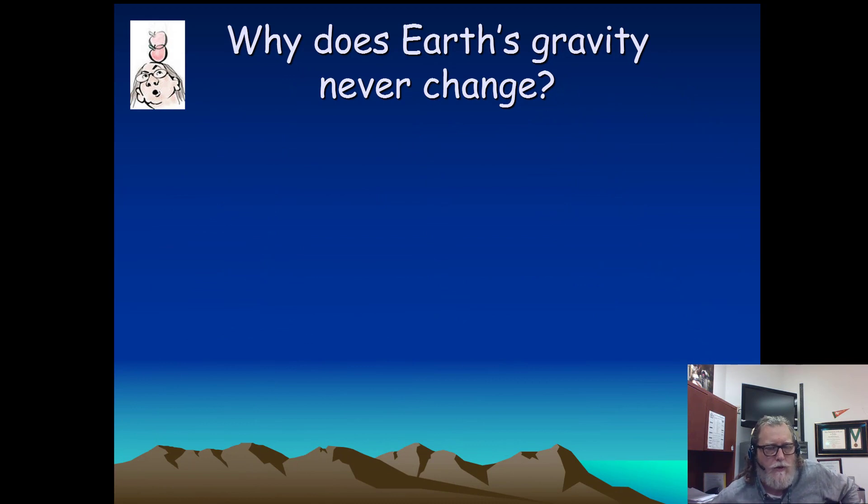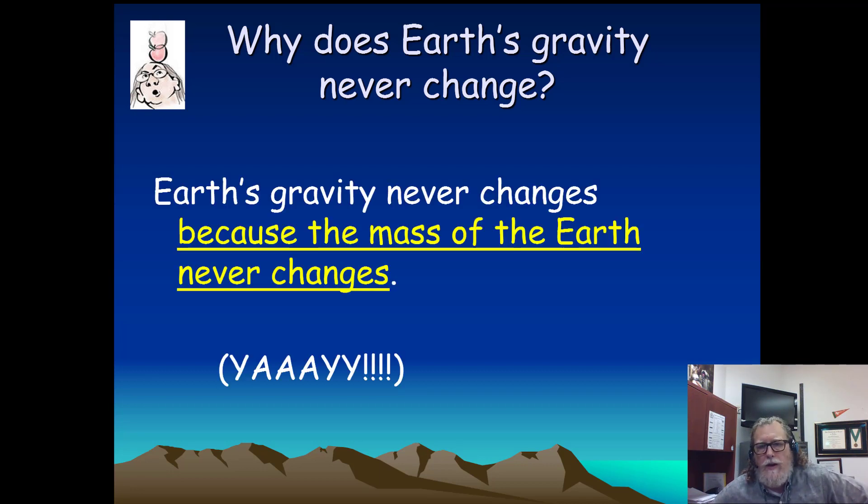So why does Earth's gravity never change? I've heard that asked. Earth's gravity never changes because the mass of the Earth never changes. Remember that a property of gravity is that it's based on mass. The more mass something has, the more gravitational pull it'll exert. So because our Earth is consistent in its mass, the gravitational force associated with it will never change. Unless the mass of the Earth changes, which would be not a good thing.